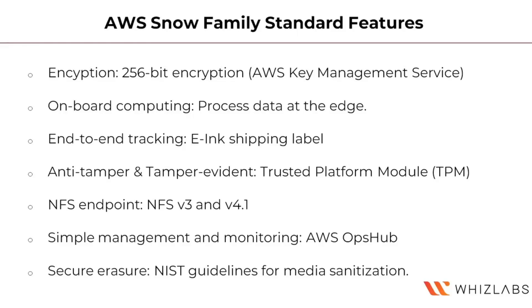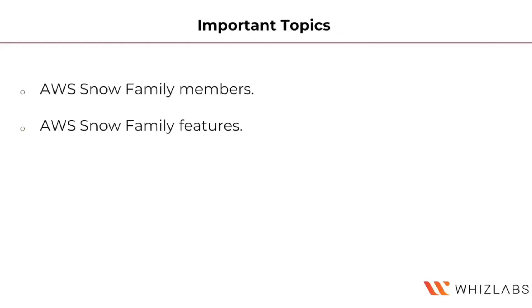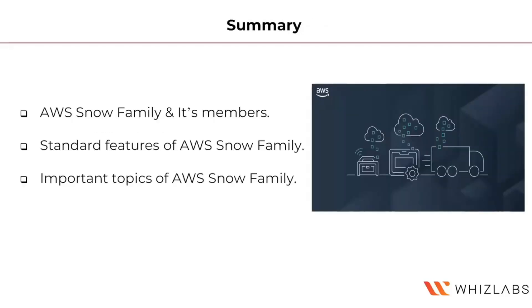Those are the standard features of the AWS Snow Family. The important topics include the three AWS Snow Family members — Snowcone, Snowball, and Snowmobile — and the standard features we have just covered. In this module, we have learned about AWS Snow Family and its members, the standard features, and the important topics from the exam perspective.